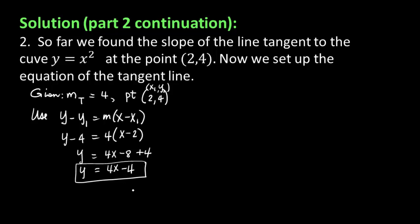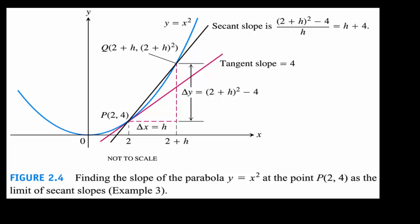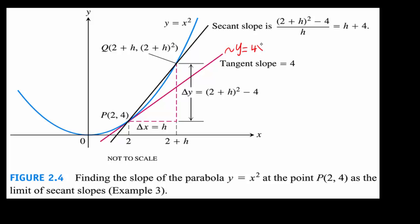Now let's look at the graph of y equal to x squared — that's the graph of a parabola. Here you've got the secant line, the line segment that is the secant line from 2 to 2 plus h. Then as h goes to 0, this point gets closer and closer to 2, and this black line becomes a tangent line whose slope is 4. That's the line tangent to the curve, with equation y equal to 4x minus 4.